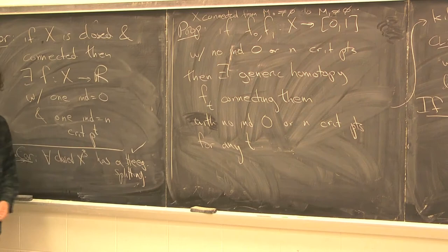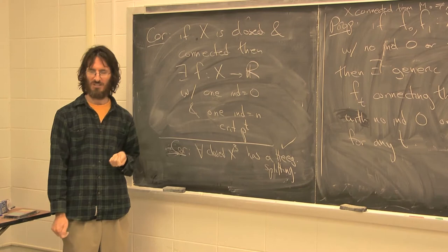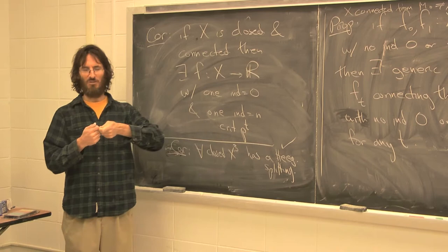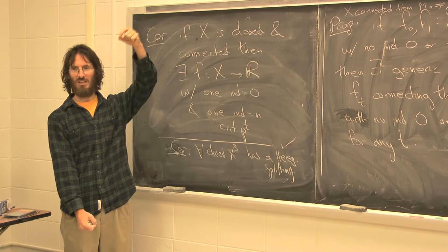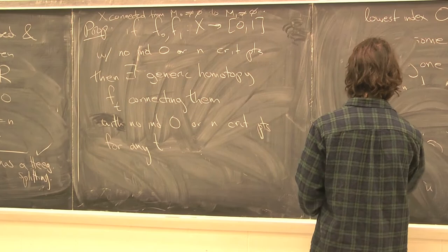Remember, a generic homotopy will have isolated times when it's not a Morse function. Before and after those points you have critical points. So basically, you don't have to have births of 0-n pairs. You started out with no zeros or ns, and there's no reason to introduce them along the way. This would be used to prove the Reidemeister-Singer theorem, which tells how two different Heegaard splittings are related.